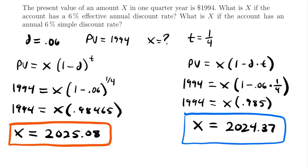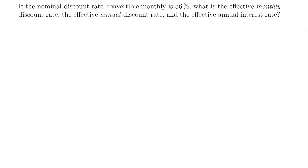You can see that we got two different values for X in each of those cases — they're not going to be the same. It's important that you recognize the difference between a compounded or effective annual discount rate and an annual simple discount rate. Now let's look at another example. If the nominal discount rate convertible monthly is 36%, what is the effective monthly discount rate, the effective annual discount rate, and the effective annual interest rate? We've got a lot of different things going on here, so let's first write down what we know.